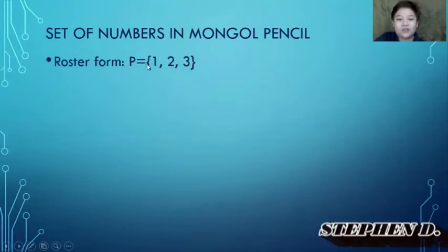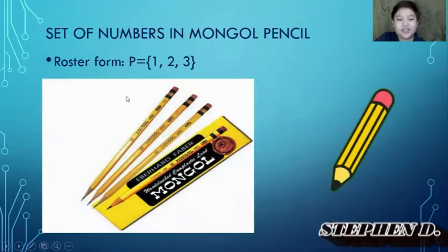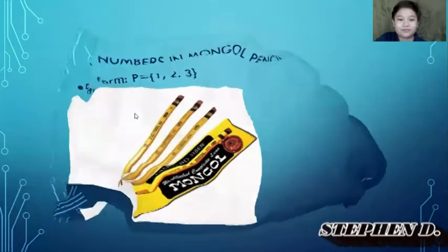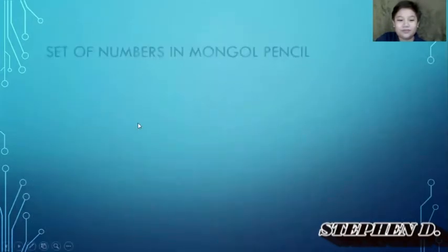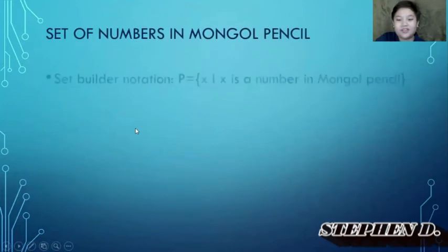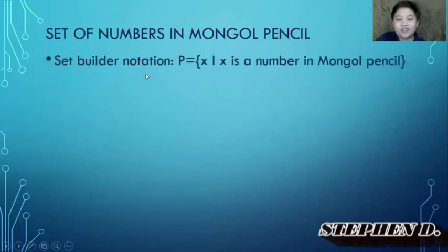One, two, and three are numbers in the Mongol pencil, and that's how you write it in roster form. The set builder notation is: P = {x | x is a number in the Mongol pencil}.